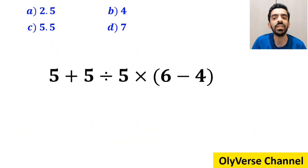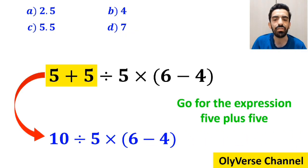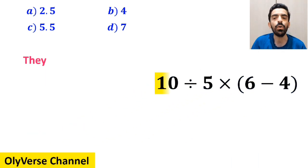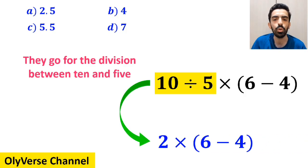Many people, when solving this question, first go for the expression 5 plus 5, and rewrite this expression as 10 divided by 5 times 6 minus 4 inside the parenthesis. In the next step, they go for the division between 10 and 5, and this expression simplifies to 2 multiplied by 6 minus 4 inside the parenthesis.